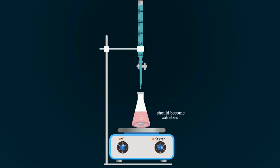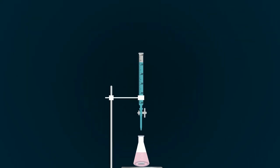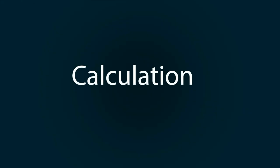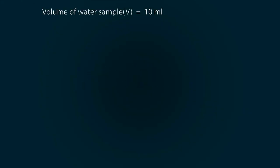You have to add the solution so that the color of the solution goes and water turns colorless. Now note down the reading. So the reading of 0.1 molar HCl, or we can say titrant, is seven milliliters. Now let's do some calculations. The volume of water sample is 10 milliliters, the consumed titrant is seven milliliters, the molarity of HCl used was 0.1 molar, the molecular weight of NaOH is 40.